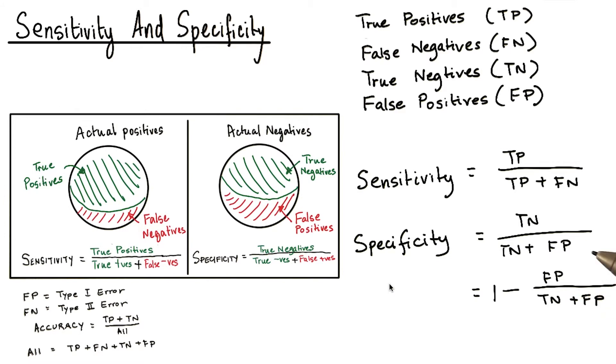For our poison wine classifier, we would want our sensitivity to be very high. That is, we want to catch almost all instances of poisoning.